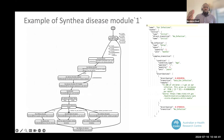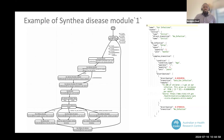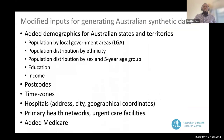The disease model continues using types of information available in the real population to progress the patient journey. These disease models are available online — you can check out Cinchia and look at the disease modules and how they work; some are quite complex. In our work, we modified Cinchia, which was originally built on US data, to reflect the Australian population.